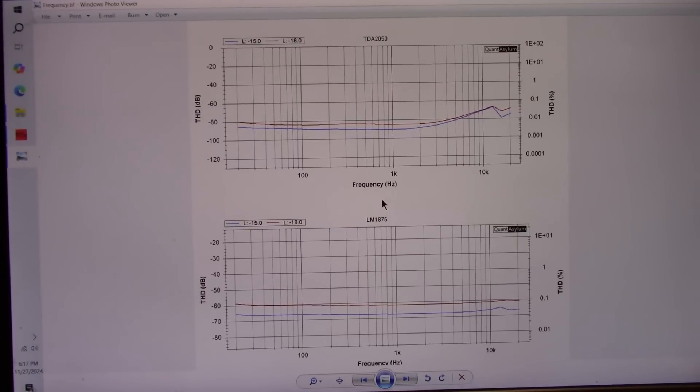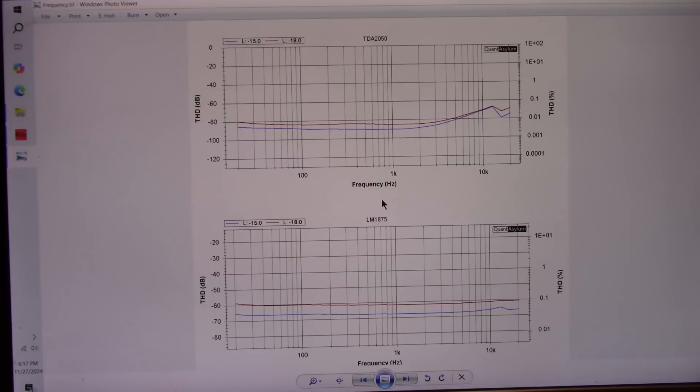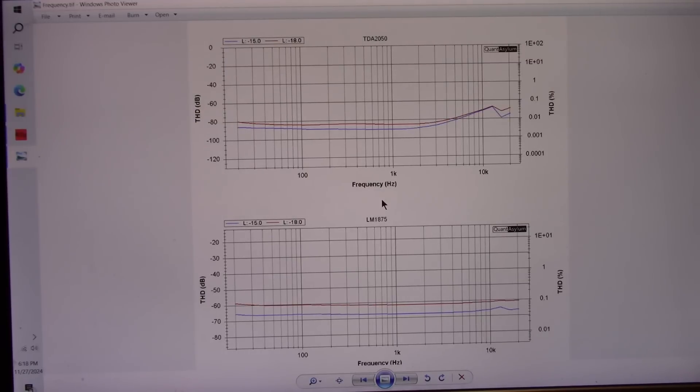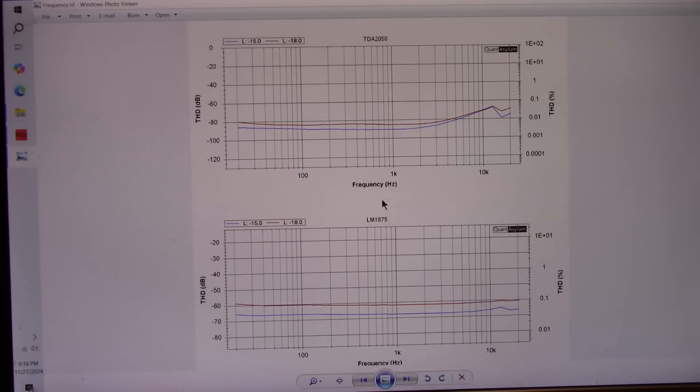Okay, so now we're looking at distortion versus frequency. I ran these tests at 2 watts. So when using the 4 ohm, I had to drop the signal level by 3 dB to keep the power the same.